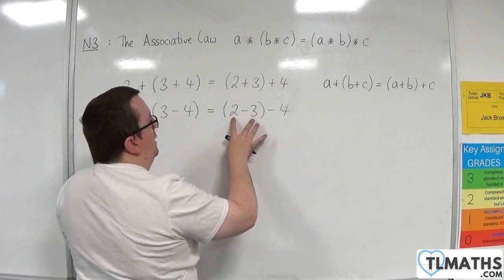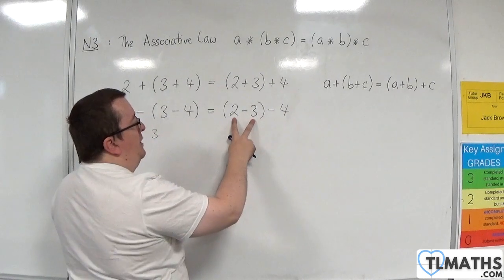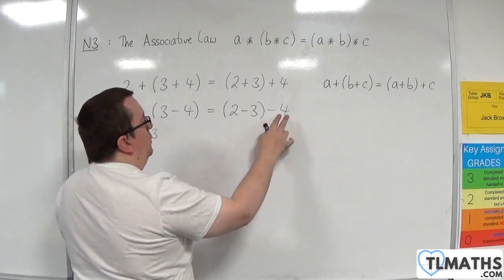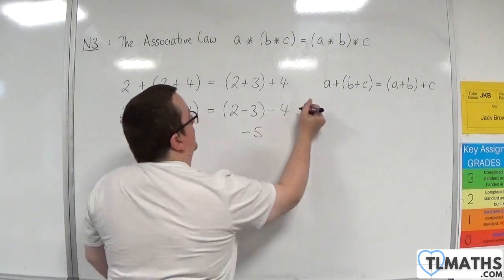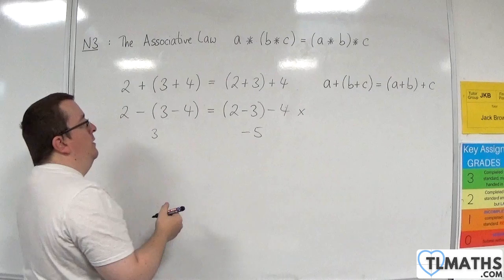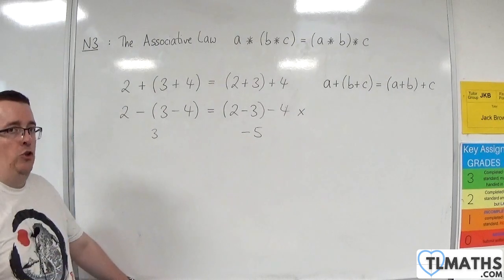The right-hand side, we have 2 take away 3, which is minus 1, take away 4, which is minus 5. These two are not the same. So for subtraction, it is not associative.